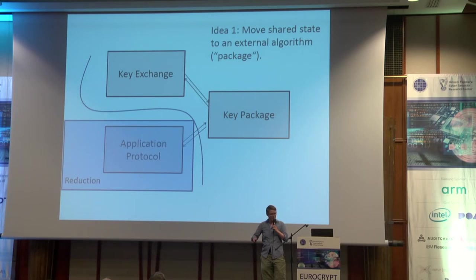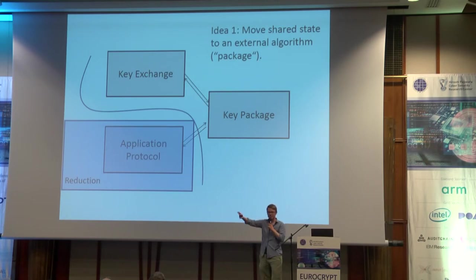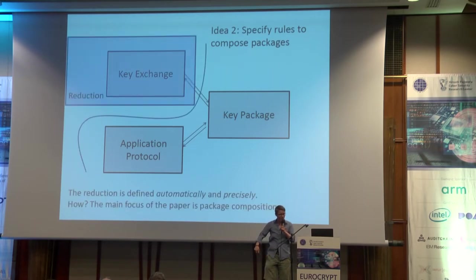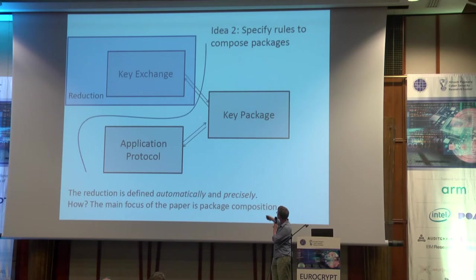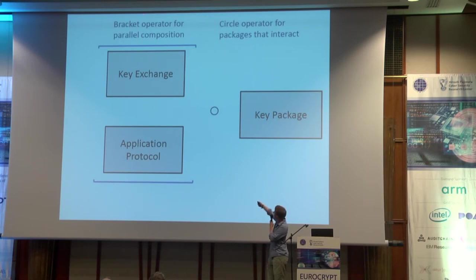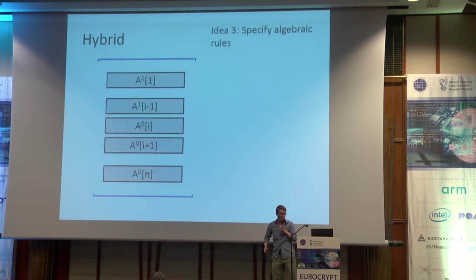The first idea is to say: if we share state between packages, maybe we can move the state to a key package and have the shared state in a single location, and then you have rules to specify those packages. Then you get the reduction automatically. The idea is to define operators that allow you to compose packages — one is a record operator for parallel composition, and if they use a package in a channel of a router, this allows you to do proofs in a very simple way.